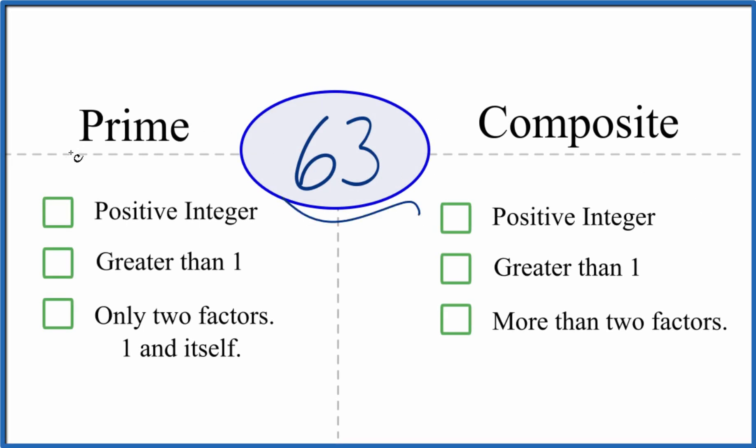Let's see if 63 is a prime or a composite number. And here's how we tell. So let's first look and see if 63 is prime.